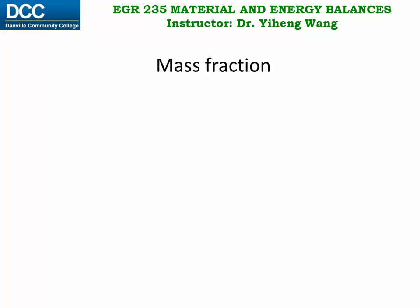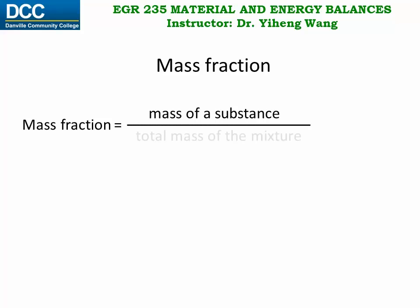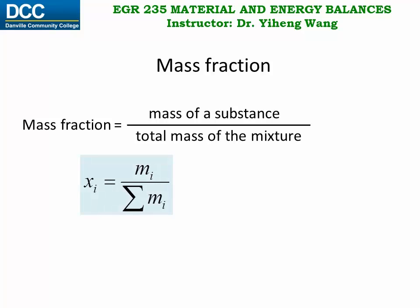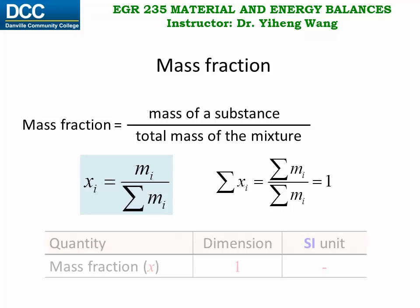In a mixture, the mass fraction of a certain component is defined as the mass of this substance divided by the total mass of the mixture. Xi, where i indicates component i, equals mi — the mass of component i — divided by the total mass. Therefore, if we add up the mass fractions of all components in the mixture, we get one. Because mass fraction is a ratio, it is dimensionless.